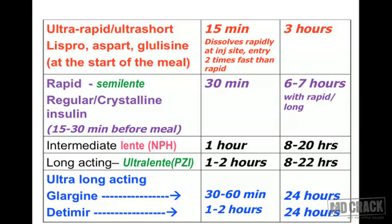By the time the patient has eaten and sufficient blood sugar enters systemic circulation, these ultra-rapid insulins are already active. The next group is the rapid-acting insulins, also called semi-lente insulins — also known as classical regular insulin or crystalline insulin. Their onset of action is 30 minutes, and the action lasts for six to seven hours.